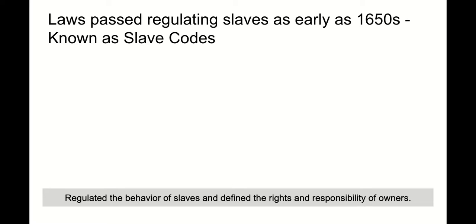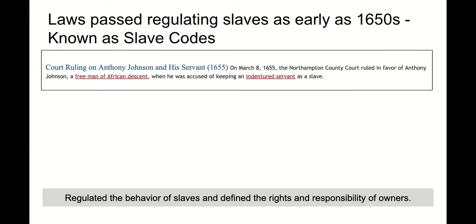Very quickly, you also have laws being passed by colonial legislatures to regulate these new people coming to the continent, as early as the 1650s. These were known as slave codes, and they regulated the behavior of slaves and defined the rights and responsibilities of slave owners. You have this court ruling between Anthony Johnson and his servant in 1655 that ruled in favor of Anthony Johnson, who was a free man of African descent, when he was accused of keeping an indentured servant as a slave.